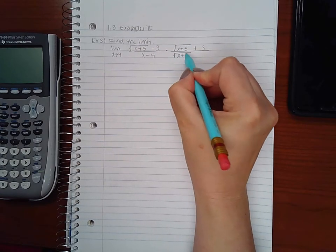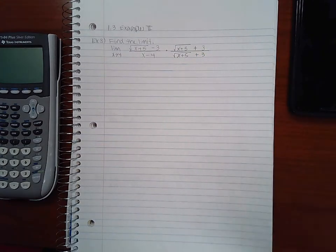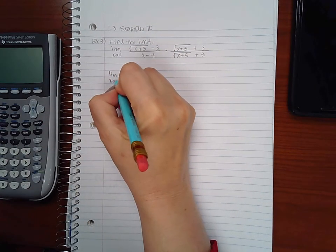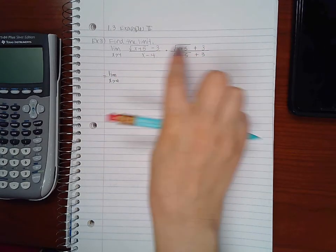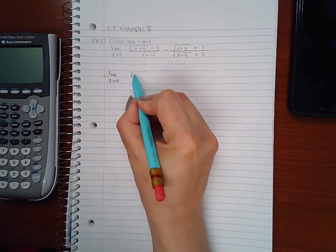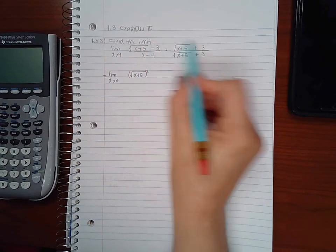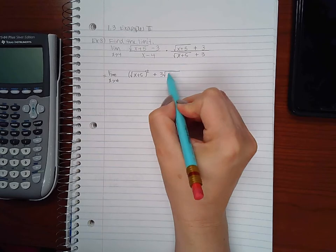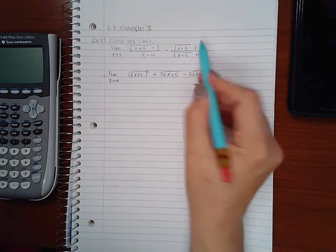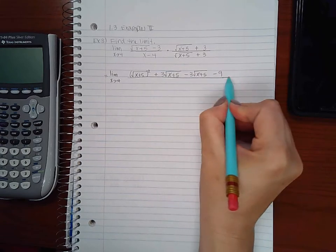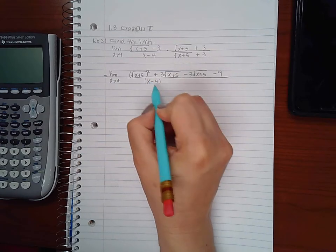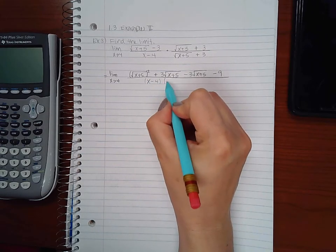Therefore, not changing the value of this expression, just changing the look. So when you multiply this out, this is a difference of squares factored out. You end up with the square root of x plus 5 squared, then you end up with positive 3 times the square root of x plus 5, then negative 3 times square root of x plus 5, and then you end up with negative 9. All over, and here I'm not going to foil it out because what I want eventually to happen is this term that was causing a zero down here to go away.